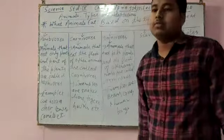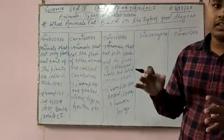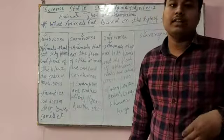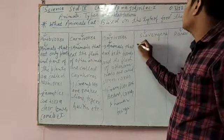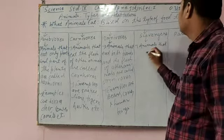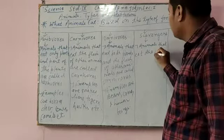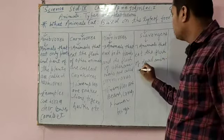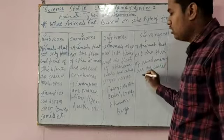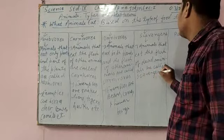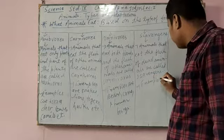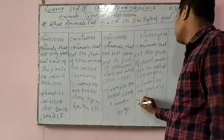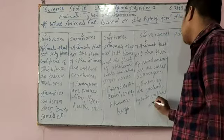Animals that eat the flesh of dead animals are called scavengers. They do not hunt. Other animals hunt, and after eating they leave some flesh behind, and scavengers eat that leftover flesh. Examples are jackals, hyenas, and vultures.